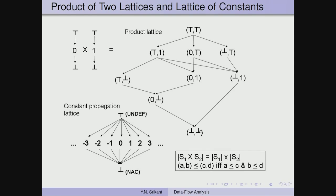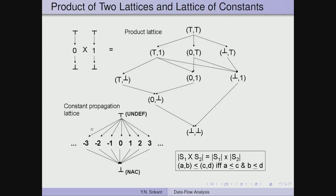Let us consider a special type of algorithm for constant propagation. Before discussing it, here is the constant propagation lattice. For each variable which may be a constant in the program, we have one lattice. The possible abstract values are: top (undefined value), an actual constant value, or bottom (not a constant, NAC). These are the only three abstract values possible.